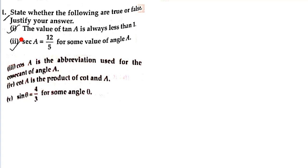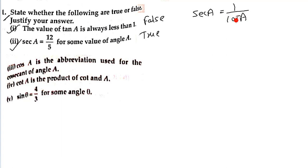Second: sec A equals 12 by 5, for some value of angle A — this is true. Why? Because sec A means 1 upon cos A. The value of cos lies between 0 and 1. If the denominator is small, the value of the reciprocal becomes large — greater than 1. So the value of sec A is always greater than 1, and 12/5 is indeed greater than 1.